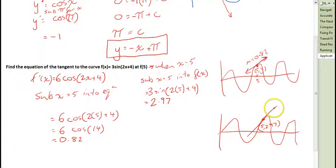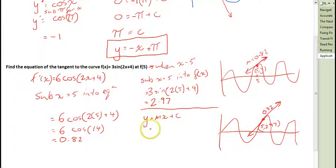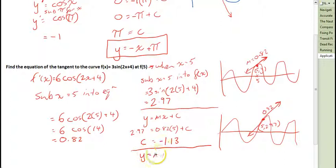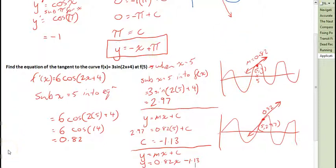If we drew a tangent at that point, the tangent would have a gradient of 0.82. The final step is to find the equation of that line: y equals mx plus c. We know y equals 2.97, gradient equals 0.82, and x equals 5. Solving for c gives c equals negative 1.13. So the equation of the tangent is y equals 0.82x minus 1.13. This stuff can get pretty complicated, so make sure you give it a try and ask in class if you need help.